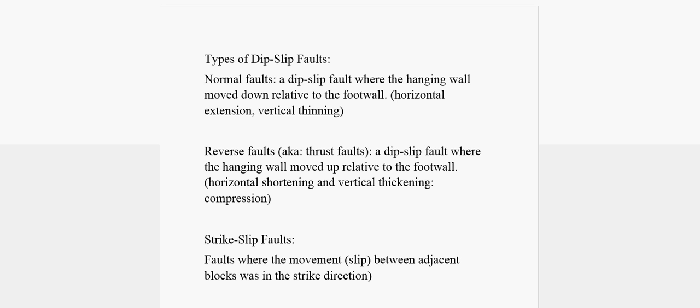Today we're going to talk about different types of faults. We have types of dip-slip faults. Under normal faults, we have a dip-slip fault where the hanging wall moves down relative to the foot wall, with horizontal extension and vertical thinning. For reverse faults, also known as thrust faults, we have a dip-slip fault where the hanging wall moves up relative to the foot wall, with horizontal shortening and vertical thickening compression.